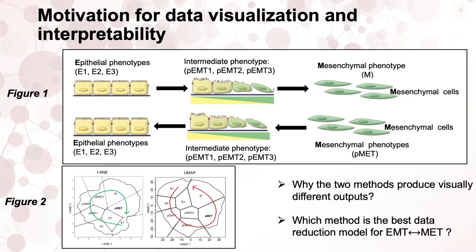The epithelial-mesenchymal transition (EMT) is a powerful and complex biological process exploited by normal and cancer cells for development and metastasis respectively. EMT exhibits a complex phenotype characterized by a reversible biological process whereby cells can return to their epithelial state from a mesenchymal state under favorable conditions. Figure 1 presents high-dimensional single-cell protein technology time-course EMT analysis, which reveals significant phenotype differences when cells undergo EMT and reversible MET processes.